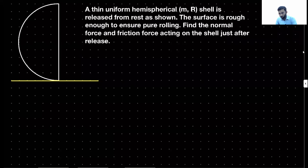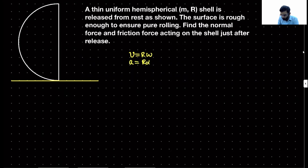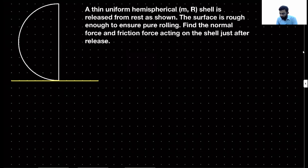Let us try to solve this question. We have been given a thin uniform hemispherical shell with mass M and radius R, released from rest from a position as shown in the diagram. The surface is rough enough to cause pure rolling, so v equals r omega and a equals r alpha. We have to find the normal force and the friction force acting on the shell just after the release.